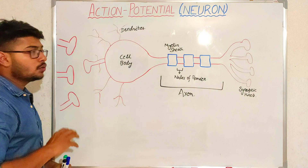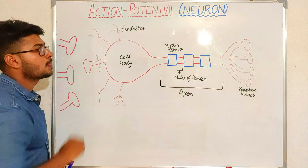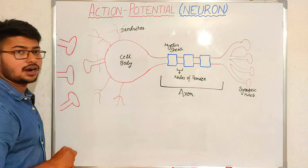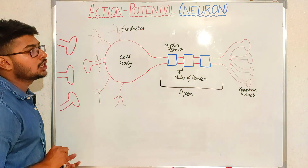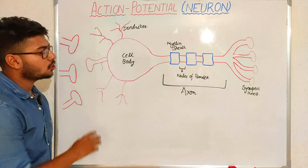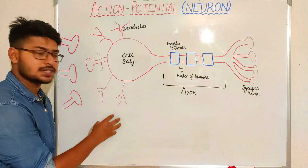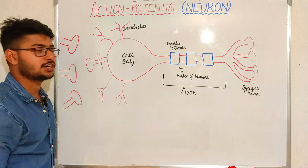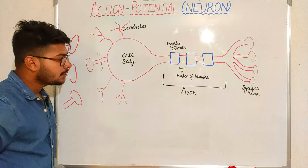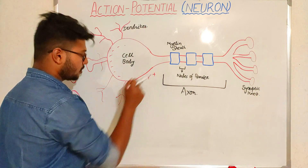We are going to learn how the action potential is generated inside our neuron cells, how it is transmitted, and its graph — which is also important for understanding the basic concepts of action potential. Physiologically, a neuron is present in a resting condition, meaning it is not generating any action potential. In the resting condition, it has negative charges inside and positive charges outside.